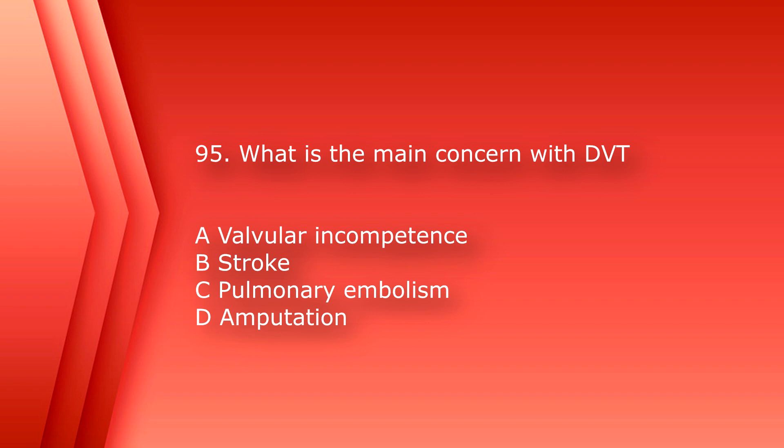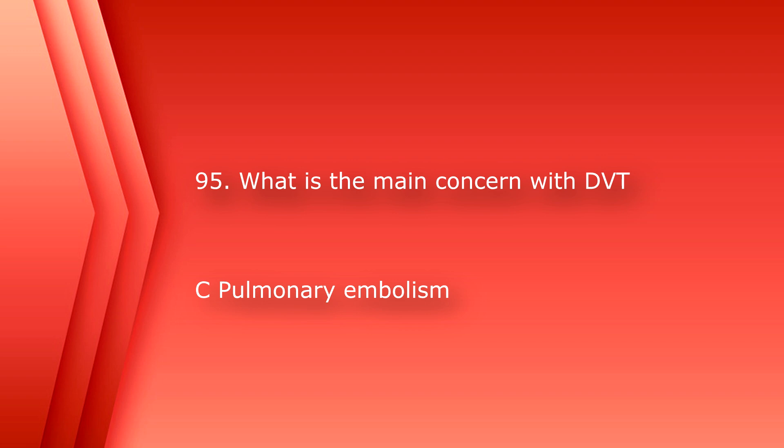Number 95: what is the main concern with deep vein thrombosis? A. Valvular incompetence. B. Stroke. C. Pulmonary embolism. Or D. Amputation. The answer is C. Pulmonary embolism. Valvular incompetence can happen with DVT, but it's not life-threatening. Stroke is more commonly associated with atherosclerotic arterial disease, and amputation is also usually arterial in nature.